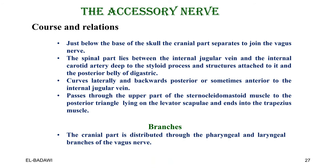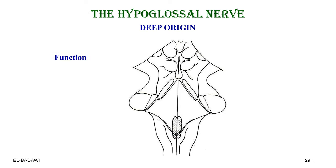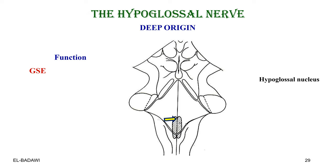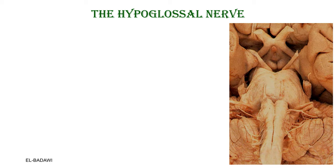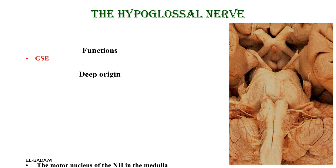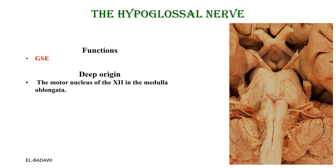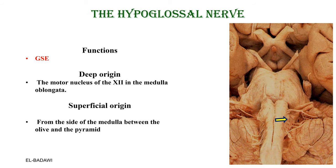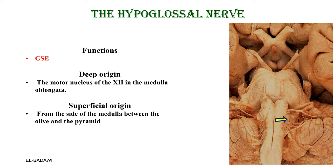The cranial part of the accessory is distributed as the pharyngeal branches of the vagus. The spinal part supplies two muscles: the trapezius and the sternocleidomastoid. Now the last nerve — the hypoglossal, the 12th cranial nerve. It has only one function: general somatic efferent to the muscles of the tongue. The deep origin is from the hypoglossal nucleus in the floor of the fourth ventricle, in the hypoglossal triangle. The superficial origin is from the medulla by about ten rootlets between the pyramid and the olive.